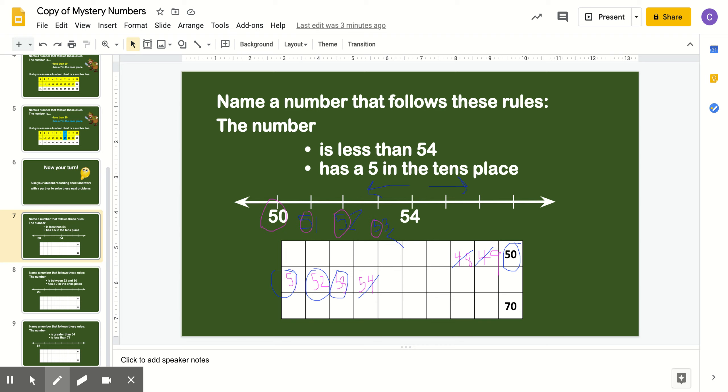So the ones that I circled are our mystery numbers because they follow the rules. It's a number that's less than 54 and has a 5 in the tens place. So that's 50, 51, 52, and 53. We use a number line and a hundreds chart to help us find the mystery numbers. Let's do the next one.